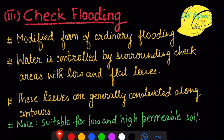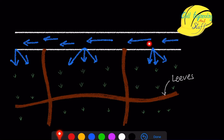The third method is check flooding, which is a step ahead of border flooding where an additional measure is taken to control the quantity of water applied to the field. We do this by constructing small, low, and flat levees. These levees restrain the water to a specific area so that water is applied to one section of the field at a time. This method is suitable for both low and high permeable soils. We divide the whole field into different sections by constructing levees all across the field.